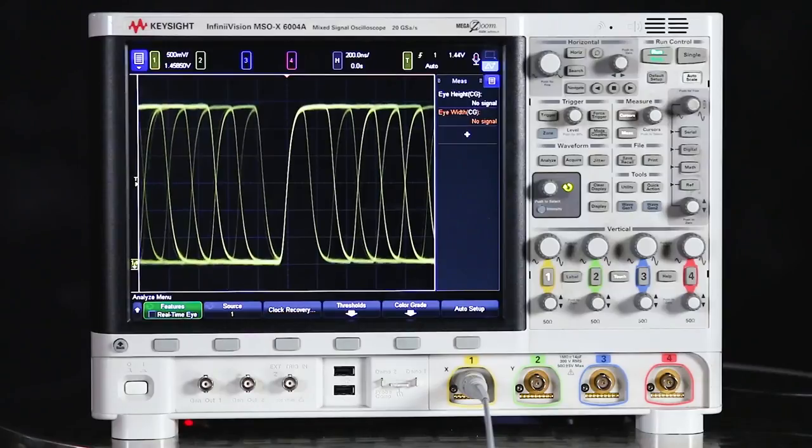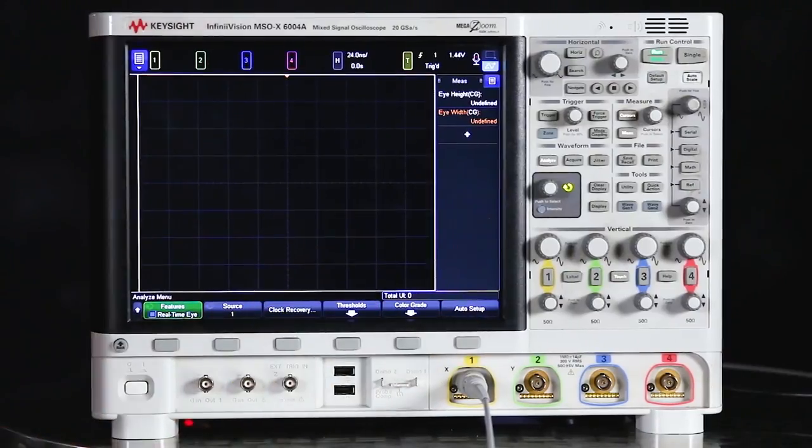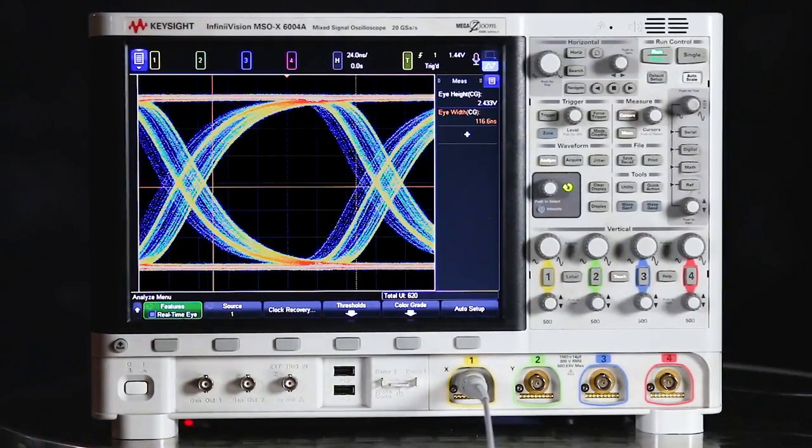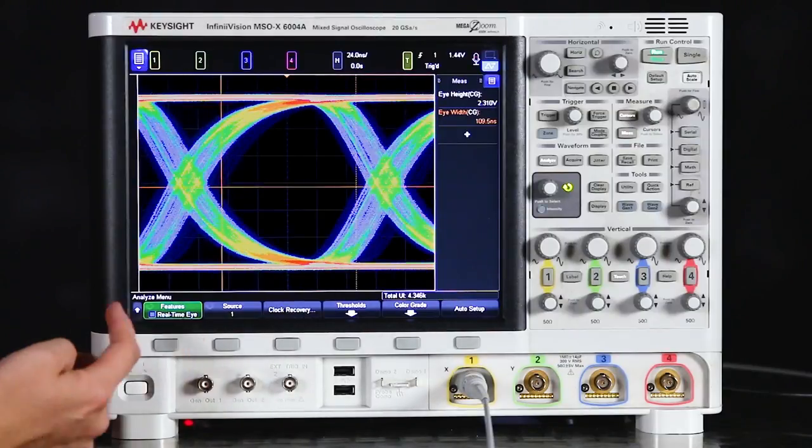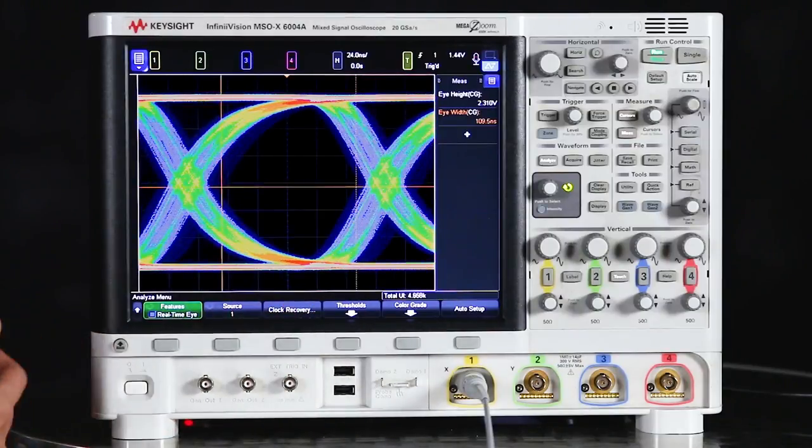And now all we have to do to set up the eye diagram is select Auto Setup. And that's going to automatically set up the eye diagram in the center of the screen. So the scope will set up that eye diagram centered around that ideal bitrate that it calculated.